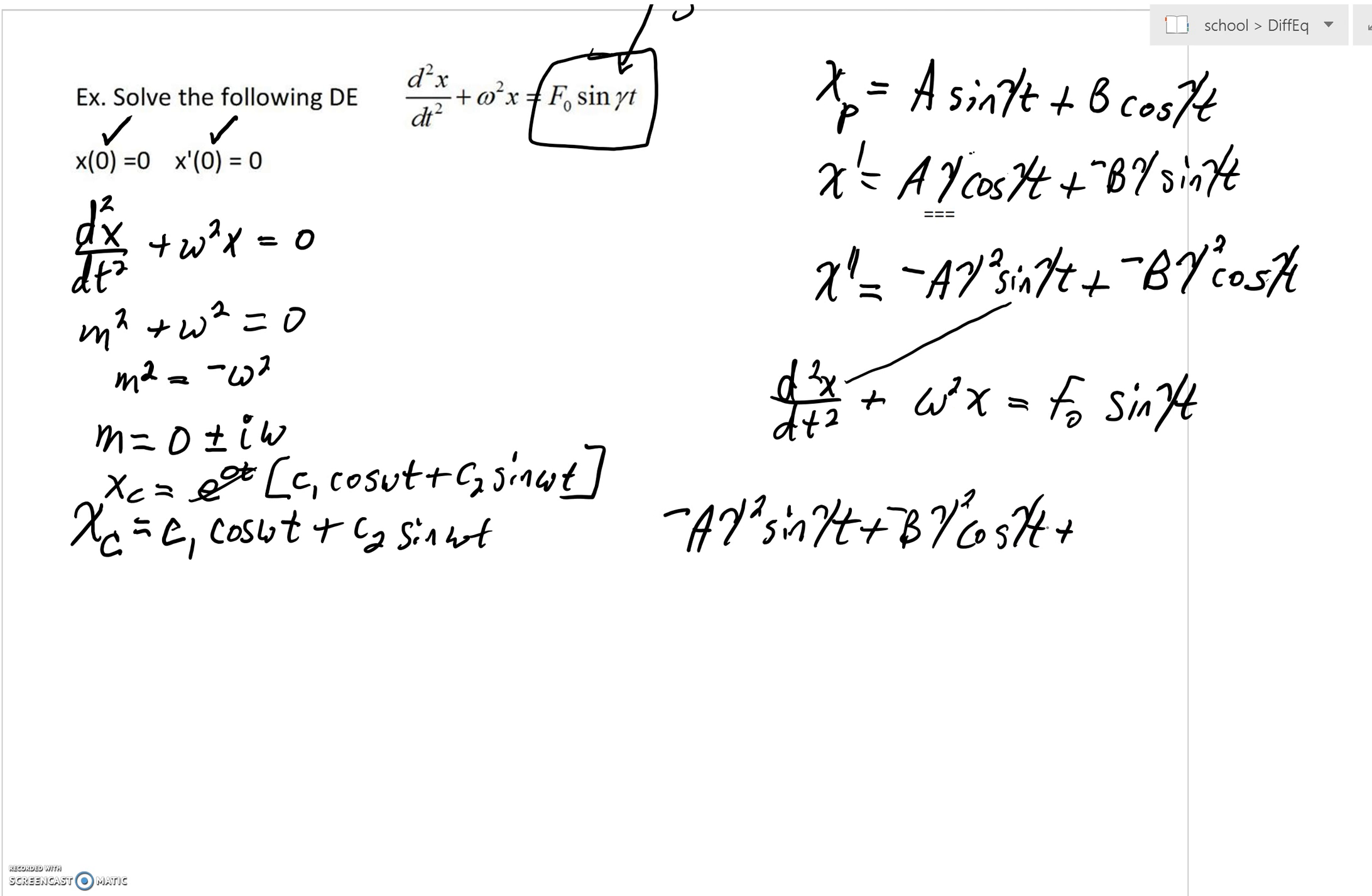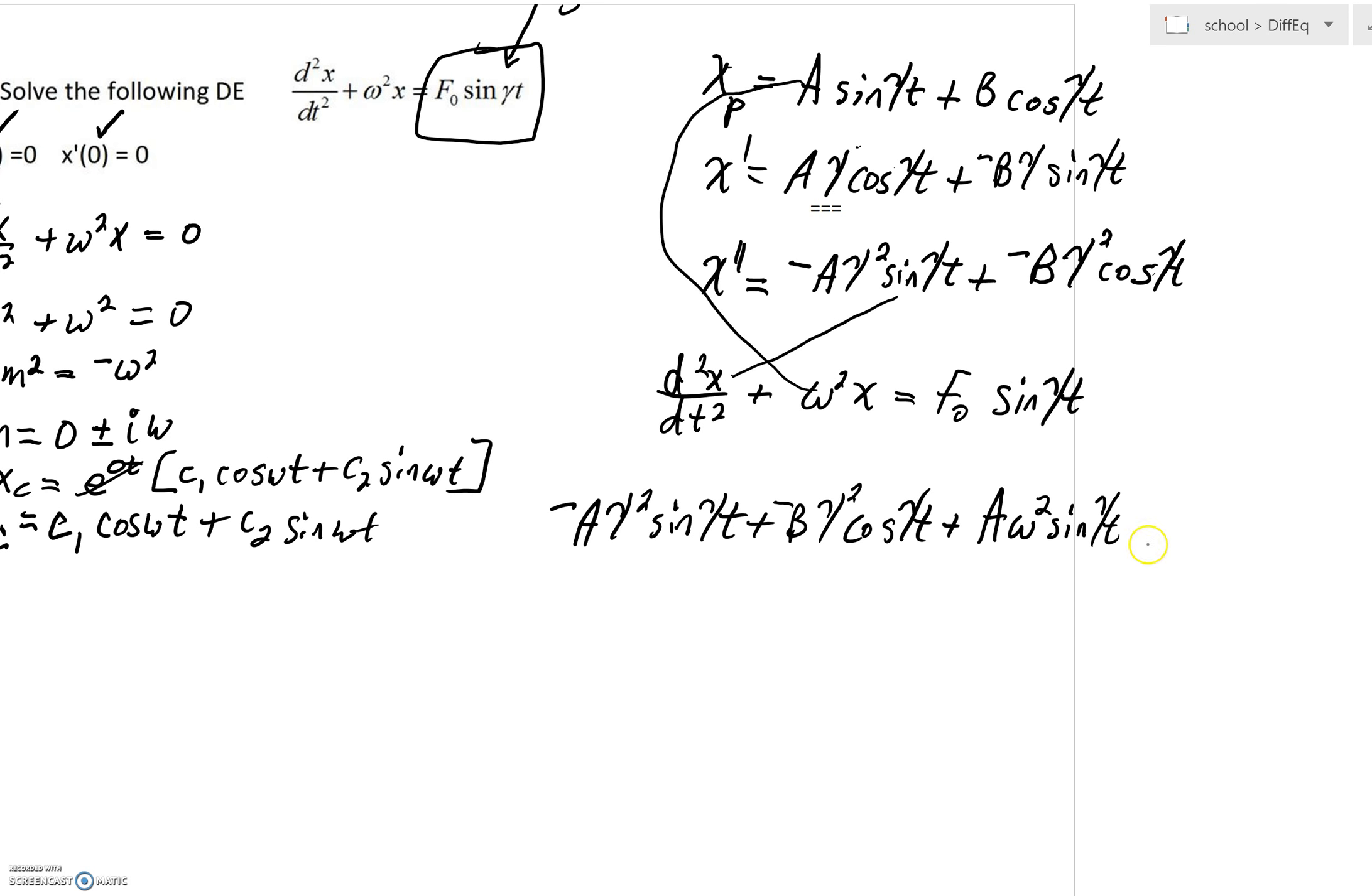We're going to have -Aγ²sin(γt) plus -Bγ²cos(γt) plus, now we're going to have ω² times x. Well, just distribute an ω² everywhere to where we have our x.